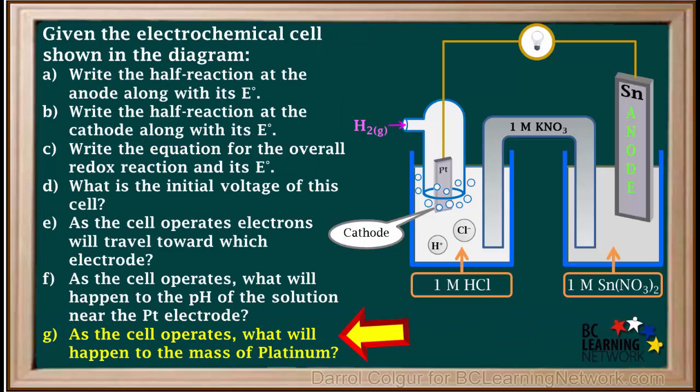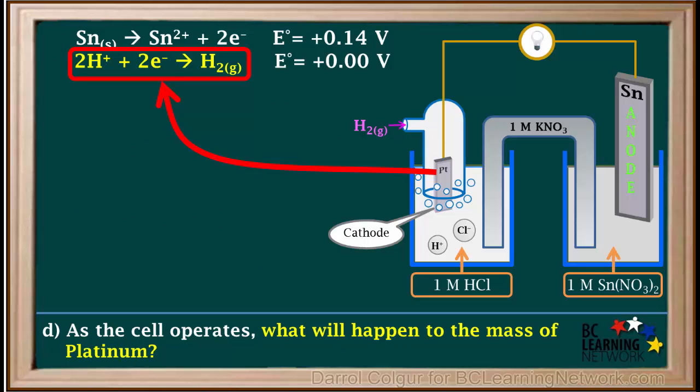The G part of this question asks what will happen to the mass of the platinum electrode as this cell operates. Remember the half reaction taking place on the platinum electrode is the reduction of H⁺ ions to hydrogen gas.